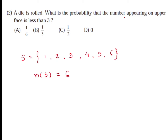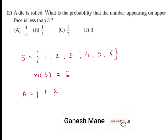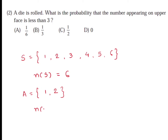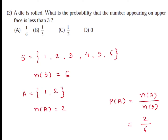We have to find the probability of event A: the number appearing on the upper face is less than 3. The numbers less than 3 amongst these six are 1 and 2. We cannot take 3 because we need numbers strictly less than 3. So N(A) = 2. P(A) = N(A)/N(S) = 2/6 = 1/3. So option B is the correct alternative.